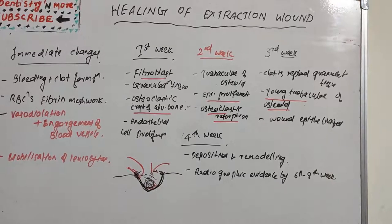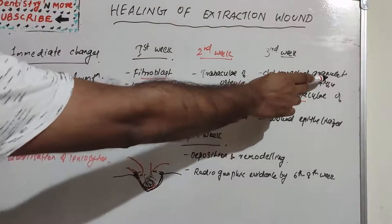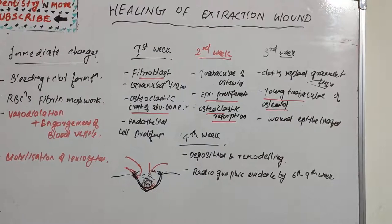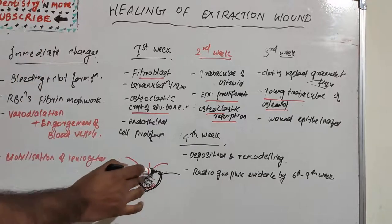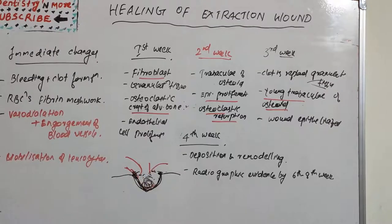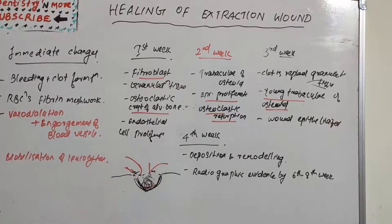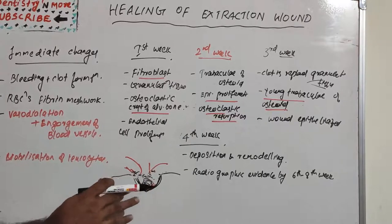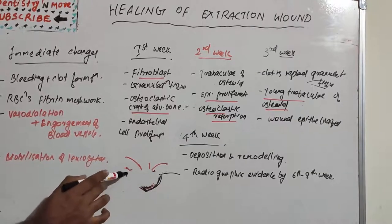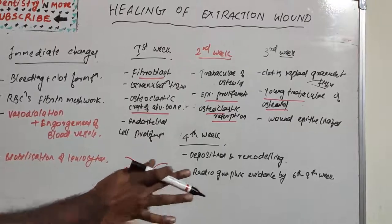In the third week, the clot is replaced almost completely by organized mature granulation tissue. Young trabeculae of osteoid tissue form around the entire periphery. The crest of alveolar bone is rounded off by osteoclasts, and the surface of the wound becomes completely organized.